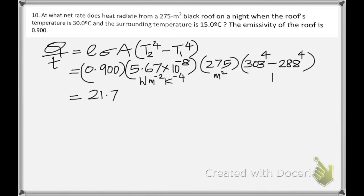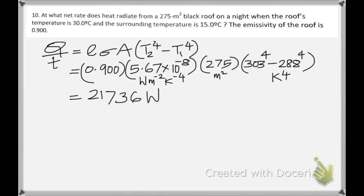The answer is 2.17 × 10⁴ watts. People commonly make mistakes because of those two large numbers raised to the fourth power. If you get this type of problem on the exam, follow the steps carefully — compute the T⁴ terms first, then multiply.